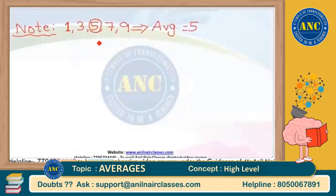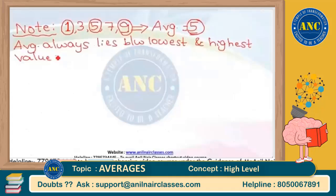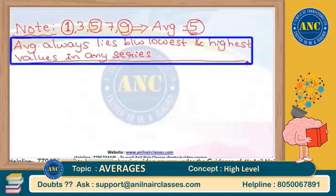For this series, the average is 5. The lowest term is 1 and the highest term is 9. Can I say that the average always lies between the lowest and highest values in any given series? This is a very important key point: the average always lies between the lowest and highest values in any given series.